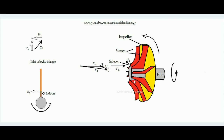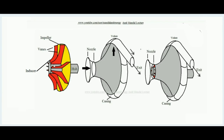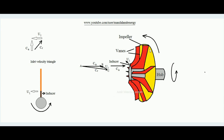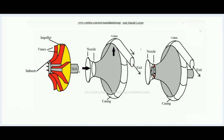Imagine the rotor is rotating inside the casing in the anticlockwise direction. The first part of the impeller vane is called the inducer, also called the inducer tip, and the outer part is the exterior tip. Since the rotor rotates anticlockwise, both the exterior tip and the inducer tip are going into the screen. Suppose the tangential velocity of the inducer tip is u1.